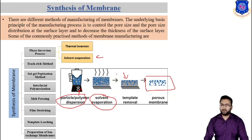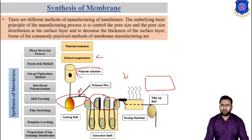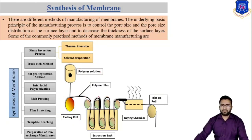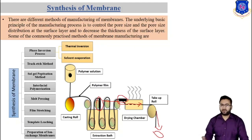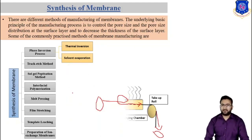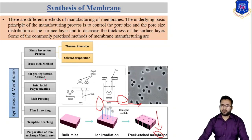In the thermal inversion method, we add a polymer solution to the casting roll, and this polymer solution goes to an extraction bath where, using a roller, we can convert this polymer solution into a flat sheet. This flat sheet goes to a drying chamber, where the polymer sheet is dried and collected as a roll. So this is all about the thermal inversion process.